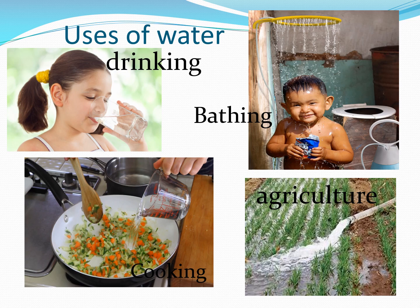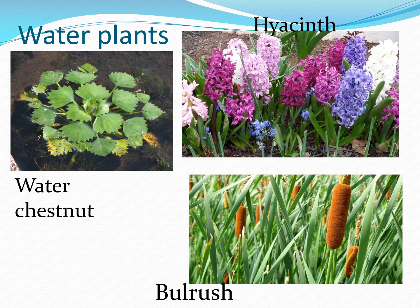Plants need water. We water our potted plants. Farmers water the crops in their fields. Could these plants live without water? Plants, like animals, need water. The trees in the forest also need water to grow. Rain water seeps into the soil, and roots of plants spread deep into the soil to absorb it. Some plants like bulrushes grow only in water. The lotus, water chestnut and hyacinth are also plants that grow in water.